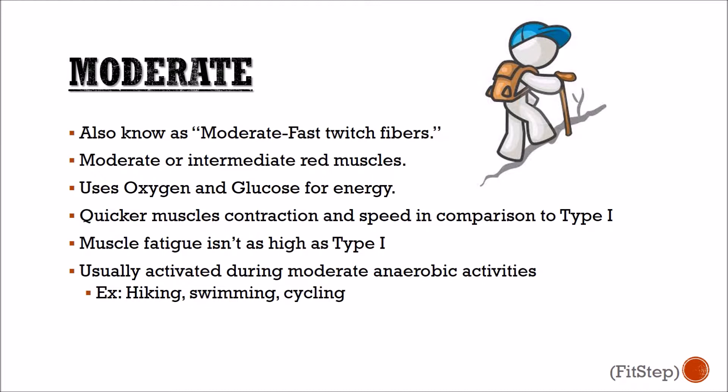Moderate muscle, or intermediate red muscle, uses oxygen and glucose for energy. It's quicker in contraction and speed in comparison to slow twitch muscles, but the resistance to muscle fatigue isn't as high. It's usually active during activities such as hiking and swimming.